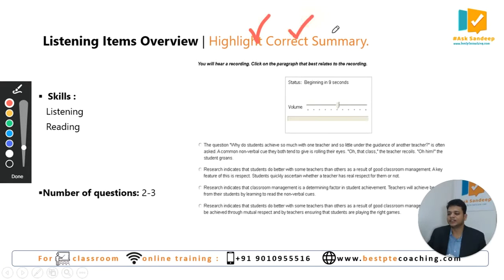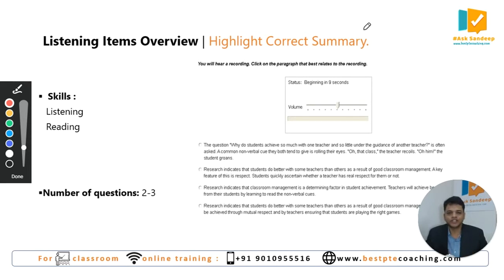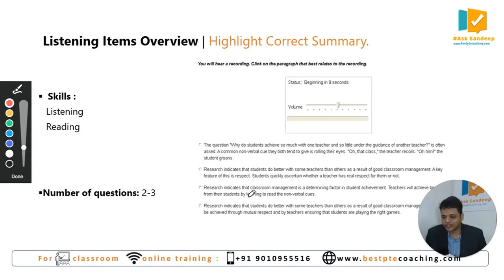Highlight Correct Summary is a very interesting question type. Unlike Summarize Spoken Text, where you listen to an audio and write the summary yourself, in this question you will not write the summary. Instead, you will have four summary choices — one, two, three, four — and after listening to the audio, you have to read these choices and pick the suitable summary for the audio. So you are selecting the suitable summary instead of writing it on your own.